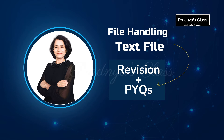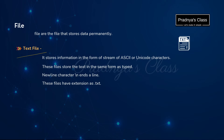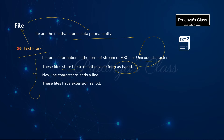We will revise this topic and try to solve the important questions and the previous year questions based on it. To know text file, we should know what is a file. File stores data permanently. Text files store the data in the same form as we type. It is generally stored in the form of unicode characters. Each line in the file will end with the backslash n, called the end of line character. The extension of the text file will be .txt, and the content will be in human readable form — we can open a text file in a text editor like Notepad.